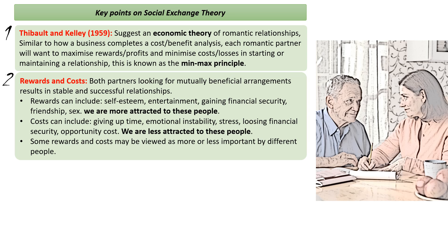The rewards and costs are fairly straightforward. Rewards include self-esteem, feeling good about yourself, having entertainment from the other person, maybe gaining financial security from a well-off partner, friendship, or sex. Social exchange theory suggests we'll be more attracted to people who offer these rewards. Costs include giving up your own time, emotional instability, stress, financial loss, and opportunity cost — if you're with that individual you're giving up going out with others. Social exchange theory suggests we'll be less attracted to those with high costs.